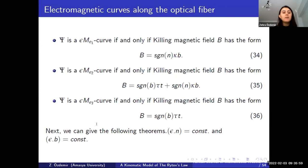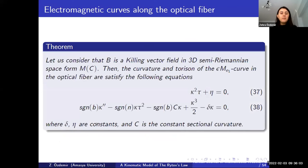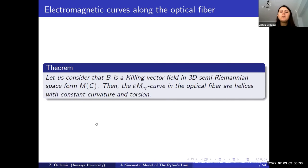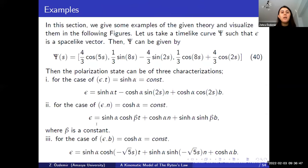We now obtain the main theorem. Let B be a Killing vector field in a three-dimensional semi-Riemannian space form. Then the curvature and torsion of the E1-electromagnetic curve satisfy certain differential equations. If B is a Killing magnetic vector field, the E2-electromagnetic curve in the optical fiber satisfies further equations. If B is a Killing vector field for the E2-electromagnetic vector field in a three-dimensional semi-Riemannian space form, then the E3-electromagnetic curve in the optical fiber is a helix with constant curvature and constant torsion.